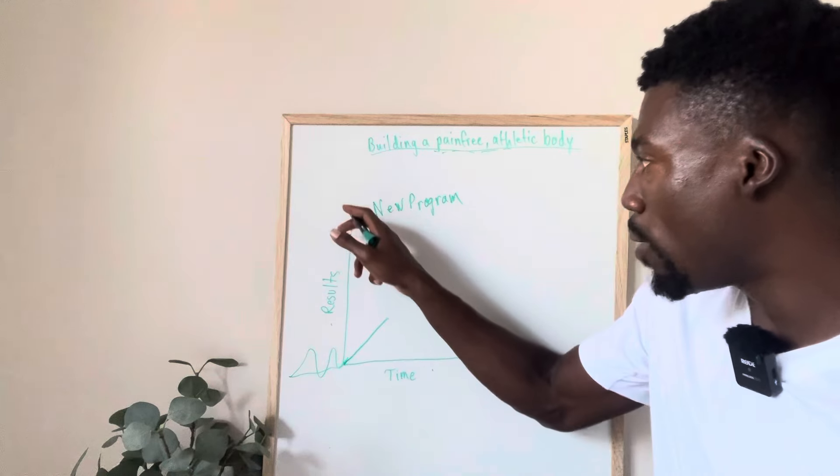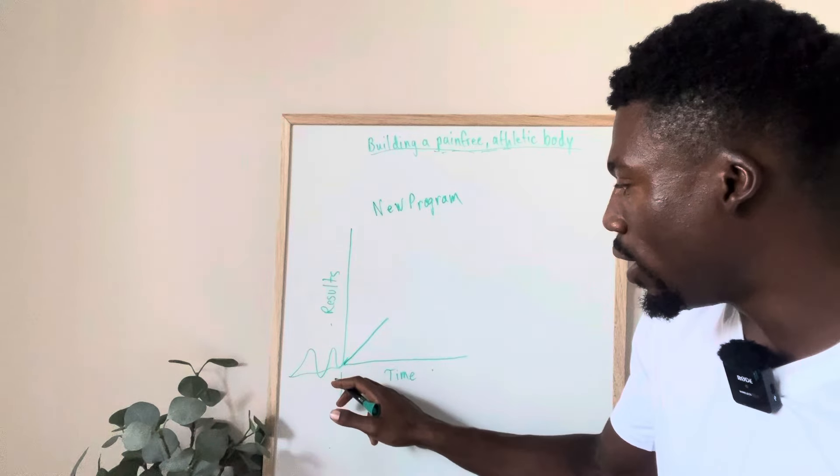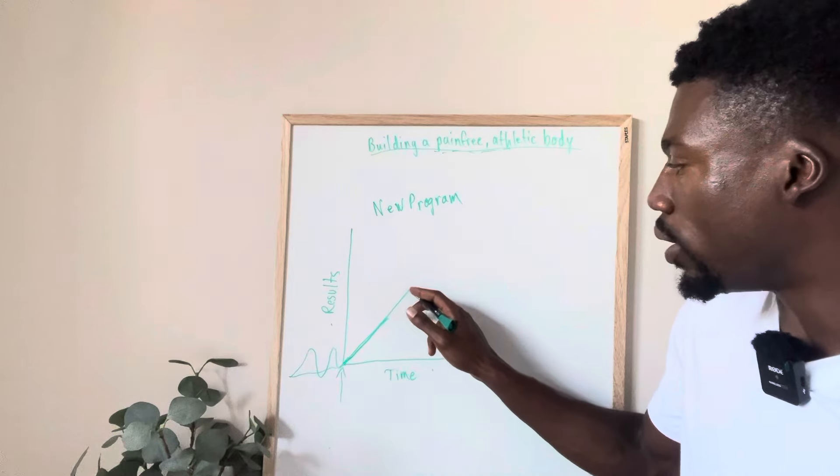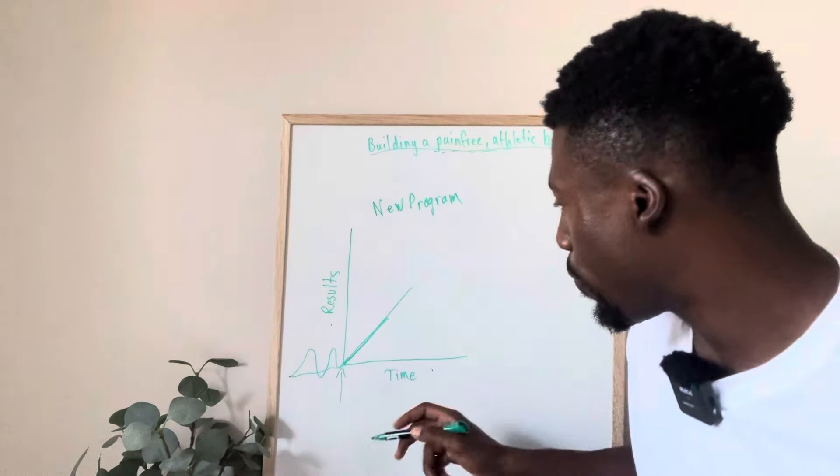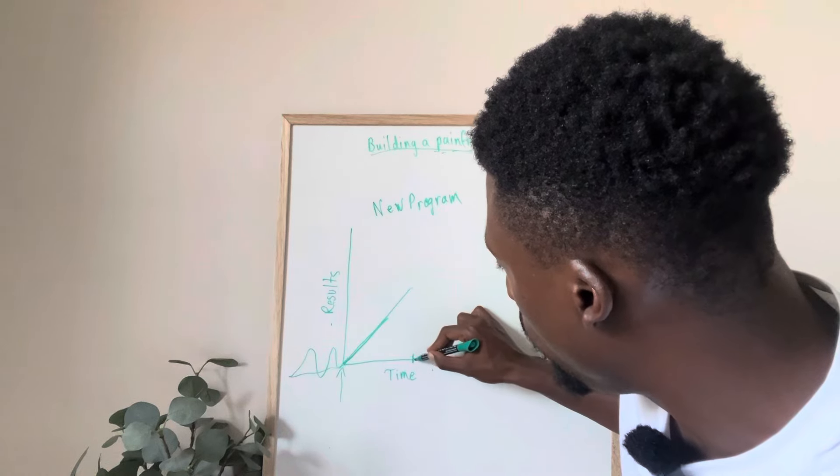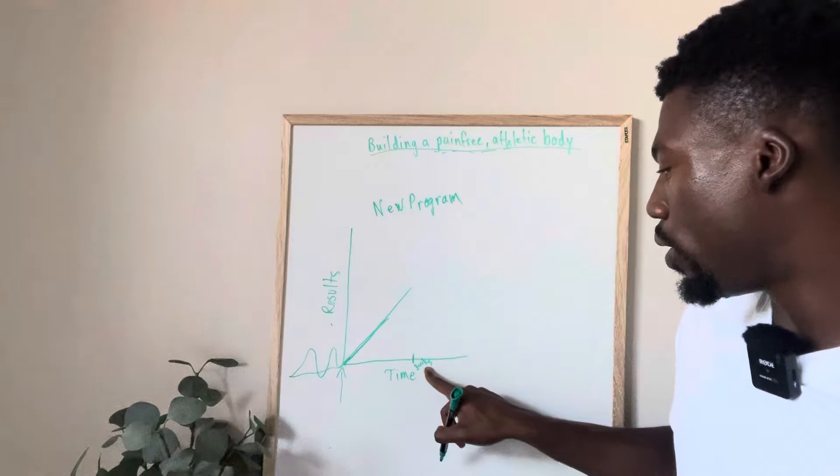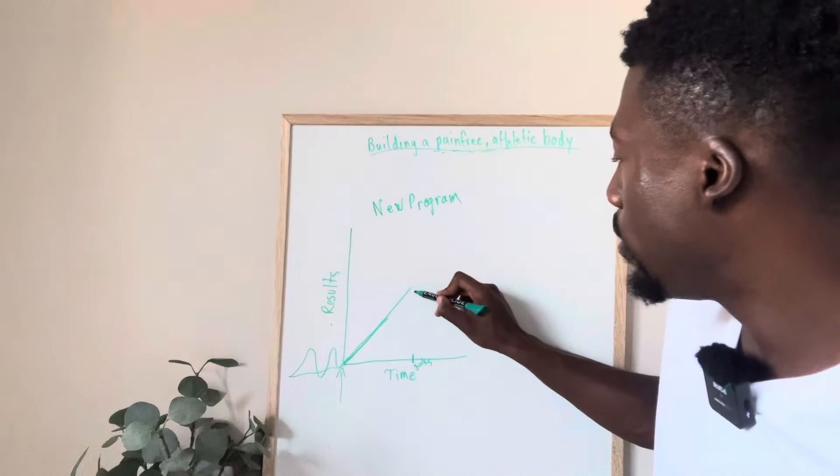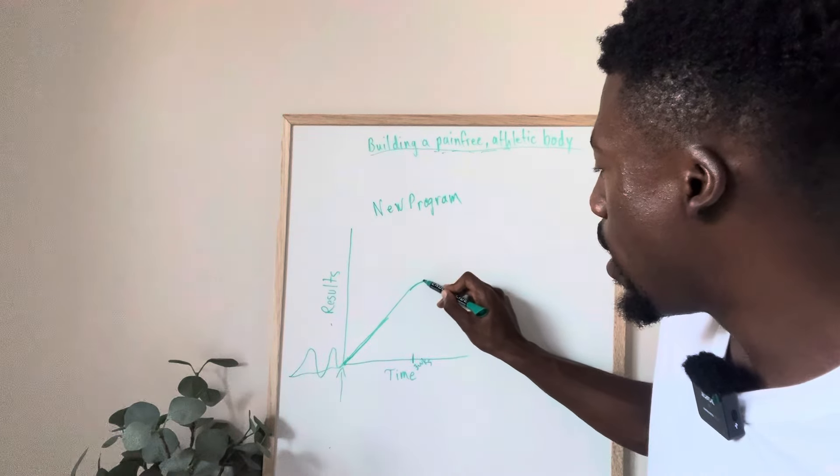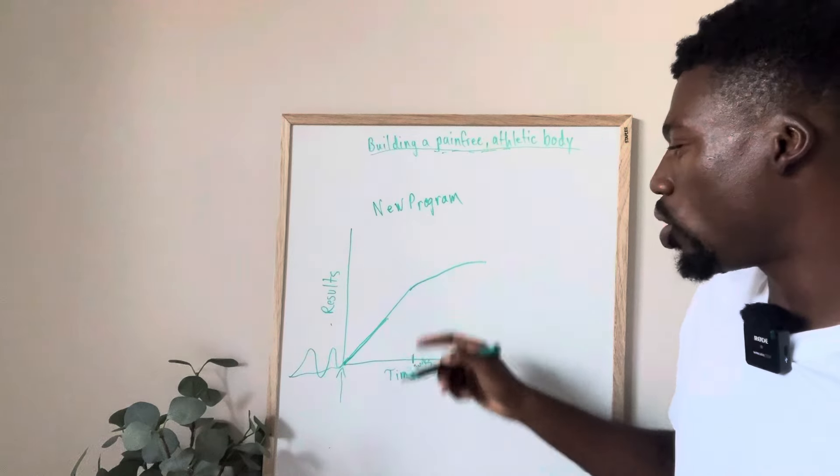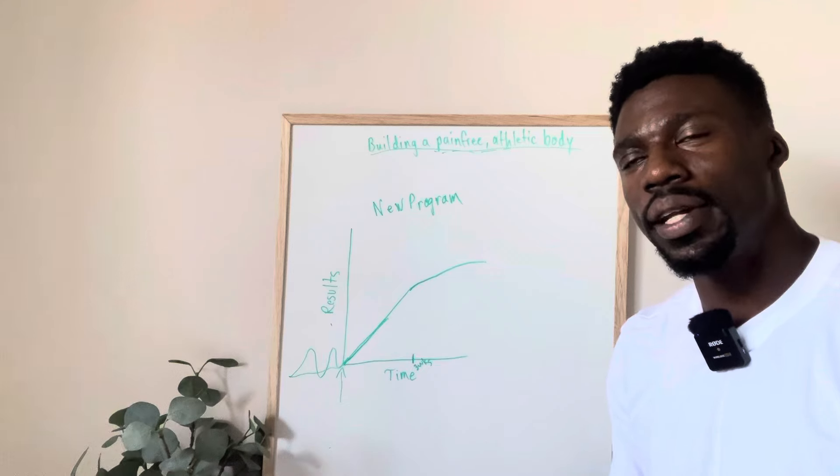So you see this huge spike in your results. Let's say before you started this new program, you were kind of just barely going on. Maybe you saw some spikes and then dips, spikes and then dips. But then you start this program right here at this point, and then you see things skyrocket.